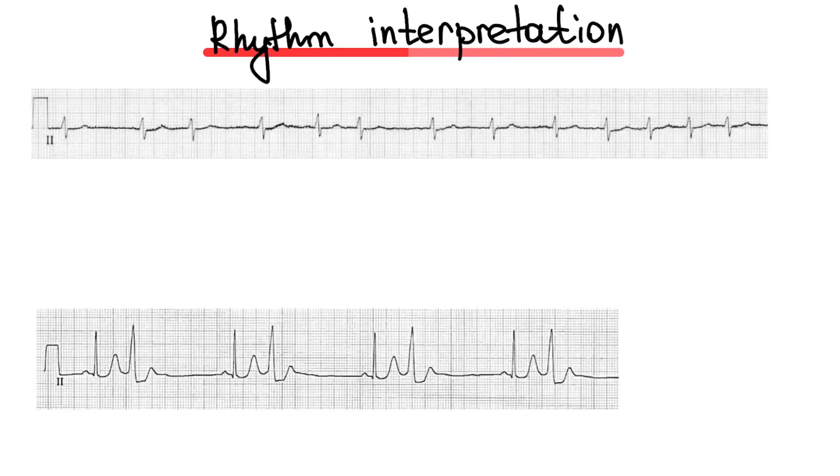Number 2: Rhythm interpretation. Is irregular rhythm always atrial fibrillation? No. We can see irregular rhythm with multifocal atrial tachycardia or premature complexes. Like this. When we talk about atrial fibrillation it's irregular rhythm.